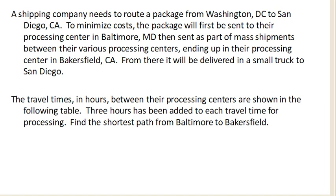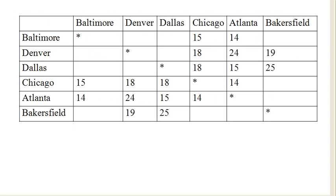We're mainly routing between these processing centers. We calculate the travel time, add a few hours for processing, and end up with a table of values that looks like this. This is the city at each point — for example, the time from Baltimore to Chicago would be 15 hours, and the time from Baltimore to Atlanta is 14. If there's no value there, that means there's no connection between those cities.